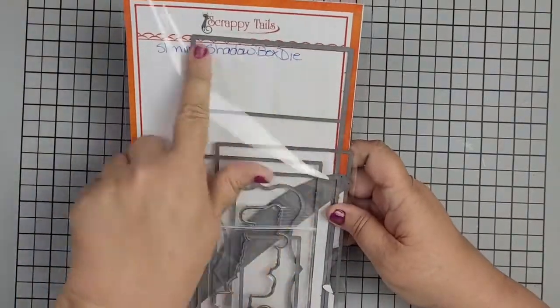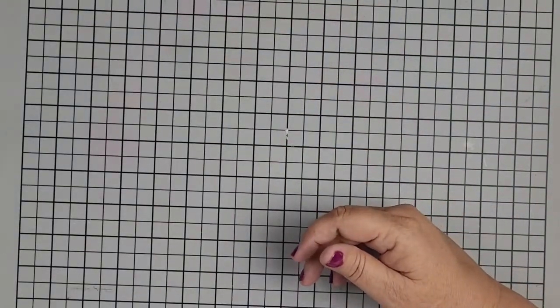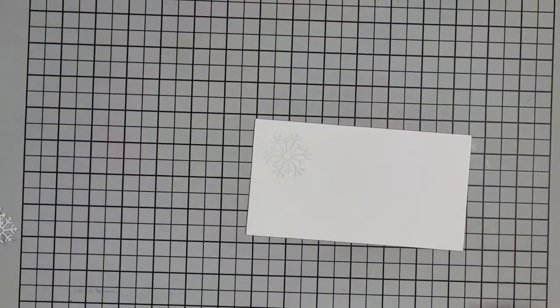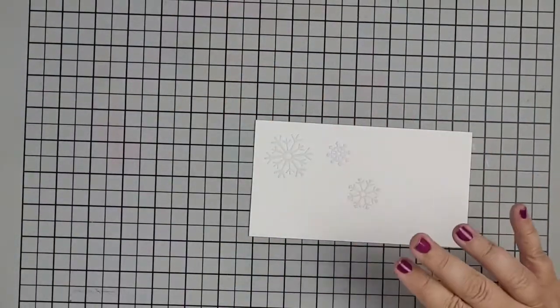Hey there friends and fellow crafters, it's Leanne and I am here with Scrappy Tails. We are using the Shadowbox Slimline die set, the A7 Cabin Spinner add-on and the Winter's Essentials die sets.